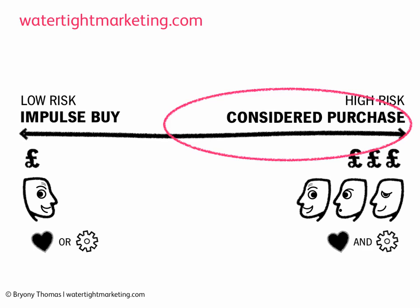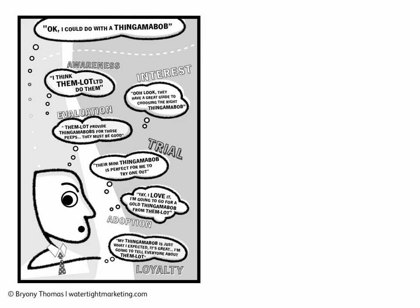If what you sell would be placed somewhere in the middle-to-right of this line, today's session is going to be really useful for you. Down on the left, the buying decision goes: see it, buy it — one step. The further you go to the right, the more steps there are. A really considered purchase goes something like: see it, like it, suss it out, try it out, buy it, love it. The steps are awareness, interest, evaluation, trial, adoption and loyalty — any marketeers listening will recognise Kotler stamped all over that. What I'm going to show you is how to map your marketing against it.